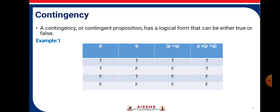Now, contingency. A contingency or contingent proposition has a logical form that can be either true or false. Consider the example: P has truth values T, T, F, F and Q has truth values T, F, T, F. P and Q give us T, F, F, F. P or (P and Q) gives us T, T, F, F. As you can see, the truth values we get are either true or false, so it is contingency.